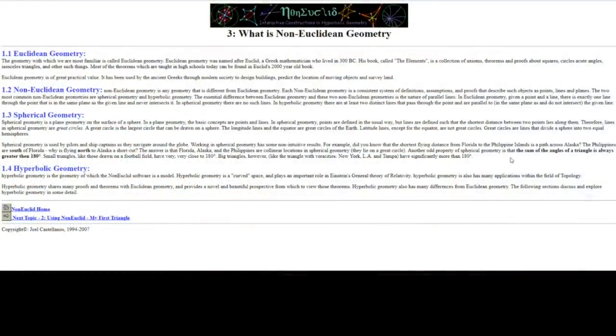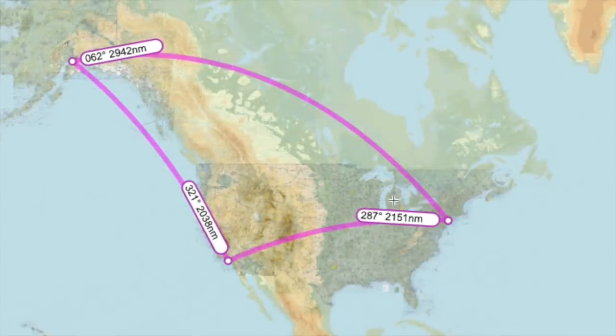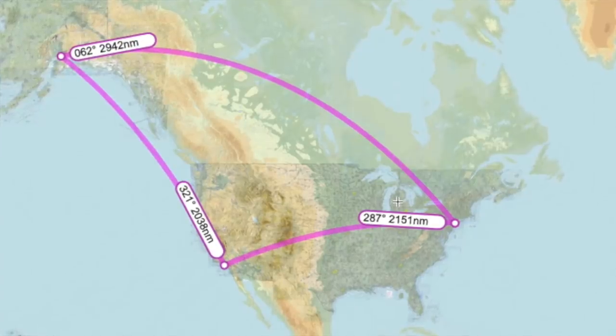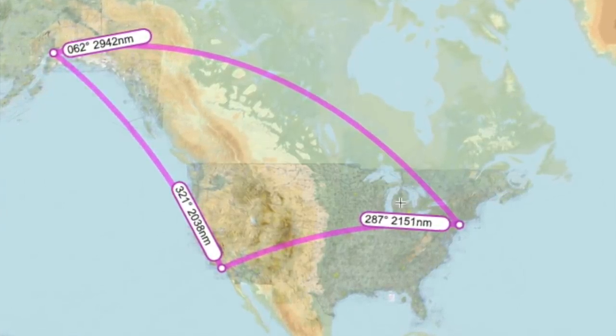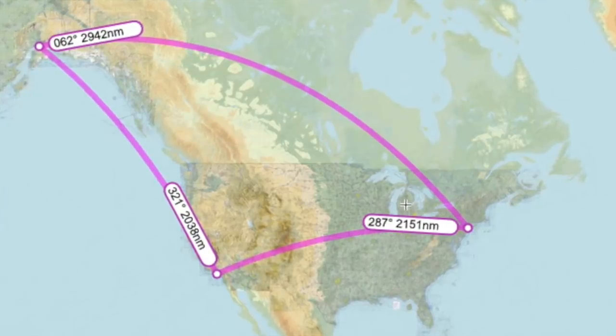Another odd property of spherical geometry is that the sum of the angles of a triangle is always greater than 180 degrees. Small triangles like those drawn on a football field are very close to 180 degrees. Big triangles, however, like the triangle with Veracities, New York, LA, and Tampa, obviously these are larger distances across the earth, have significantly more than 180 degrees. Now, take, for example, this flight route. If you go from New York to Los Angeles up to Anchorage, Alaska, and back to New York, this is what the course looks like on a flat map. Notice that each of the legs is curved. And if you add up the internal angles of that triangle, it comes to 205 degrees rather than 180 degrees. That is because the earth is a sphere. It's not a flat surface.